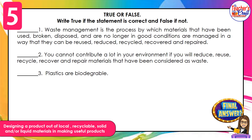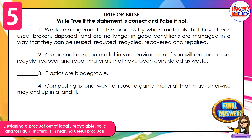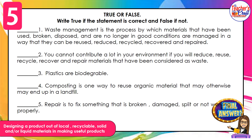Number three: plastics are biodegradable. True or false? Very nice — number three is false. Number four: composting is one way to reuse organic material that may otherwise end up in a landfill. True or false? Correct, this is true. Last one, number five: repair is to fix something that is broken, damaged, split, or not working properly. True or false? True — very good! Now, how many correct answers have you got? If you got five, you are excellent. If you have a wrong answer, you may review our lesson again.